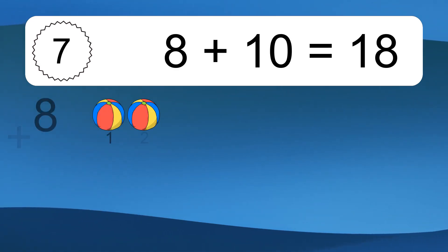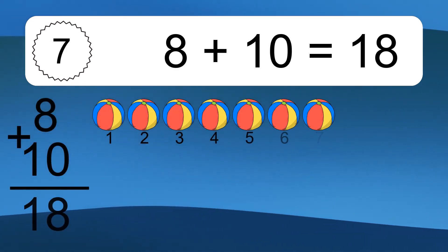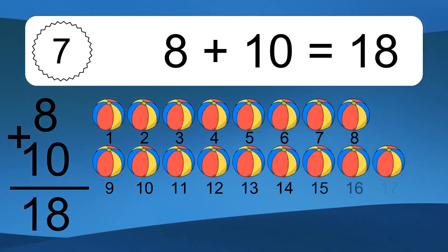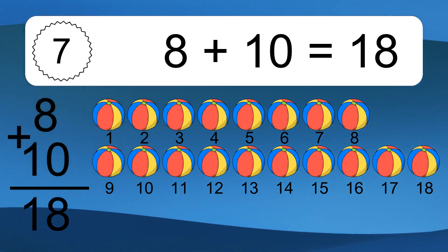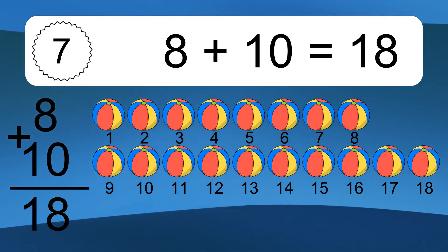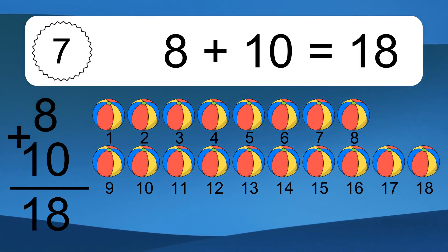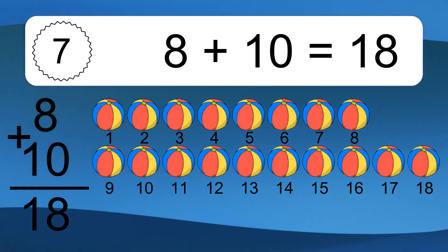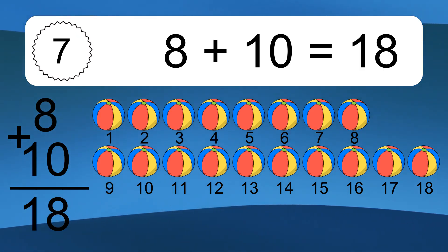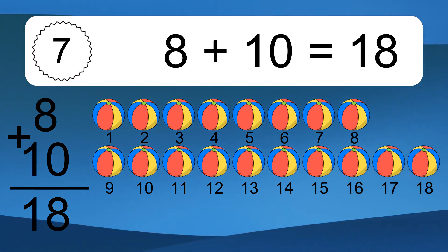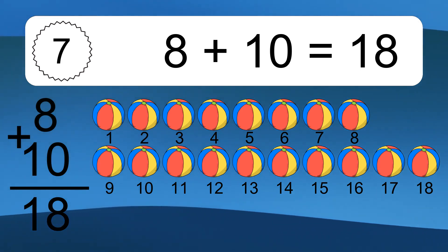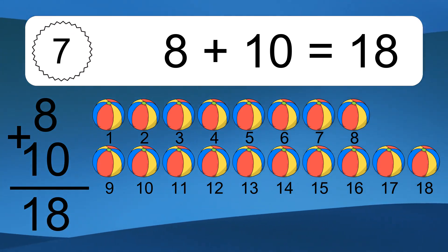8 plus 10 equals 18. Let's count it, 1, 2, 3, 4, 5, 6, 7, 8, 9, 10, 11, 12, 13, 14, 15, 16, 17, 18.